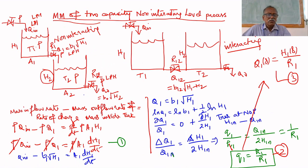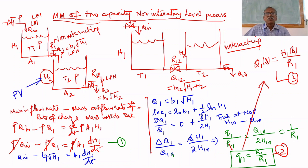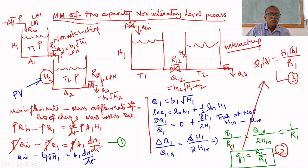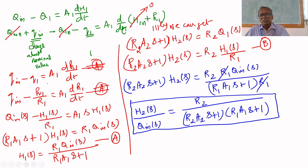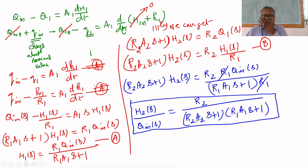Here, the process variable is h2 — we are interested in controlling h2, not h1. The manipulated variable is Q_in; by adjusting Q_in we control h2. The order of the system is second order, because we are cascading two tanks in a non-interacting way, so the order becomes second order.